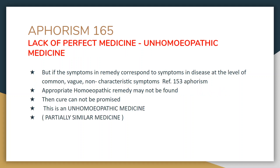Aphorism 165 again addresses lack of perfect medicine, also called unhomeopathic medicine. There are various names given: imperfect medicine, inappropriate medicine, unhomeopathic medicine, or partially similar medicine — all one and the same. These medicines cover similarity with only few symptoms and will be able to remove those few symptoms, while adding few new symptoms belonging to this imperfect medicine.